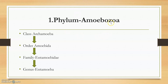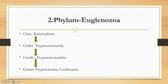The first phylum is Amoebozoa. It has the class Archamoeba, order Amoebida, family Entamoebidae, and genus Entamoeba. We have to study Entamoeba histolytica — its species, characters, morphology, and so on. This is the basic classification under phylum Amoebozoa.